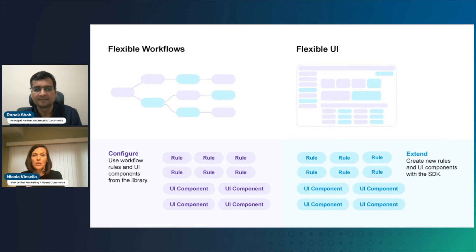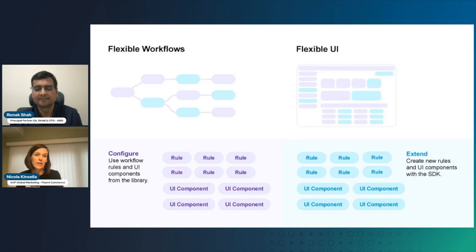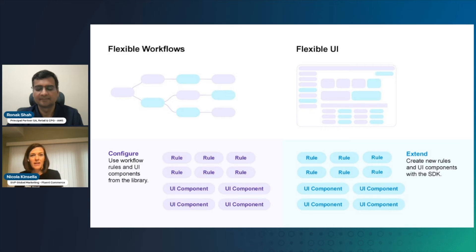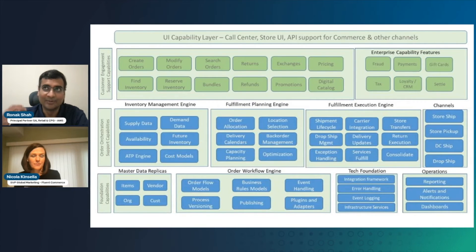We also provide a flexible front-end UI with a micro-frontend architecture, so you can configure the user experience. We provide a library of UI components, but you can also create new ones. One example is a customer who has a Slack integration for their customer service reps to escalate orders — that's their internal escalation mechanism. The customer service rep presses a button in the UI, it triggers a notification posted to Slack, and the appropriate team member handles the escalation. Our AWS architecture is key to providing this flexibility and digital agility.